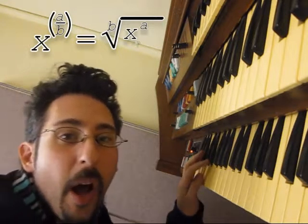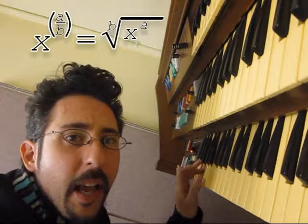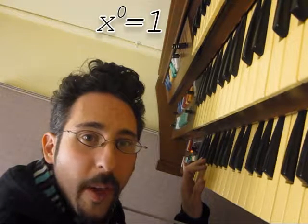And x to the power of a over b, the b root of x to the a you see. X to the 0 always 1.